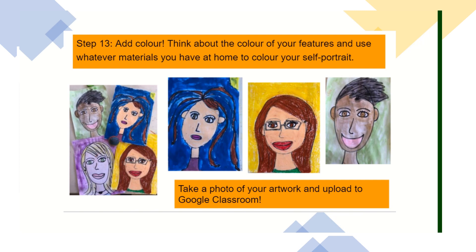Now it's time to add colour. Think about the colour of your features and use whatever materials you have at home. Think about your eye colour, your hair colour and your skin tone. You could also use a different colour for your background to make your self portrait really stand out and pop. You can use paint, oil pastels, crayon or coloured pencils — or even mix some materials, like using crayons for the face and hair and watercolour paint for the background.